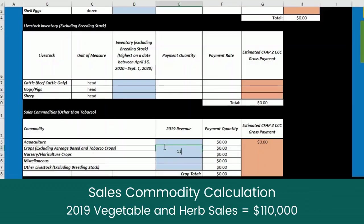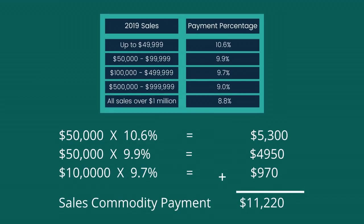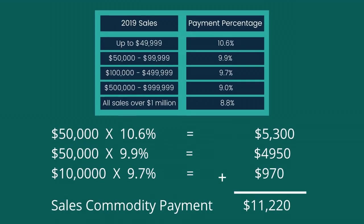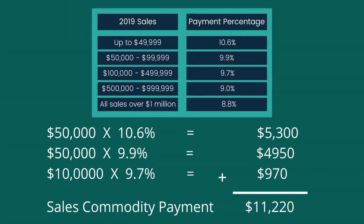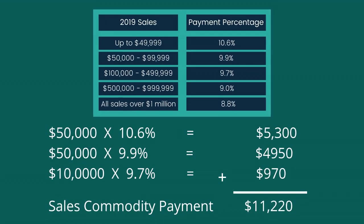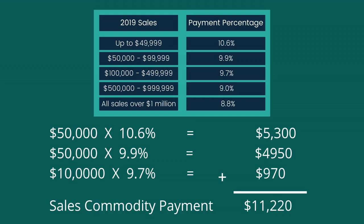However, the farmer is also able to calculate a payment for the cumulative vegetable and herb sales in 2019, which was $110,000. The payment rates for sales commodity are based on tiered income. When calculating the total payment under sales commodity, the CFAP calculator multiplies $50,000 by the first CFAP payment percentage of 10.6%, another $50,000 by the next highest percentage of 9.9%, and $10,000 by the third tier percentage of 9.7%, for a total payment of $11,220.